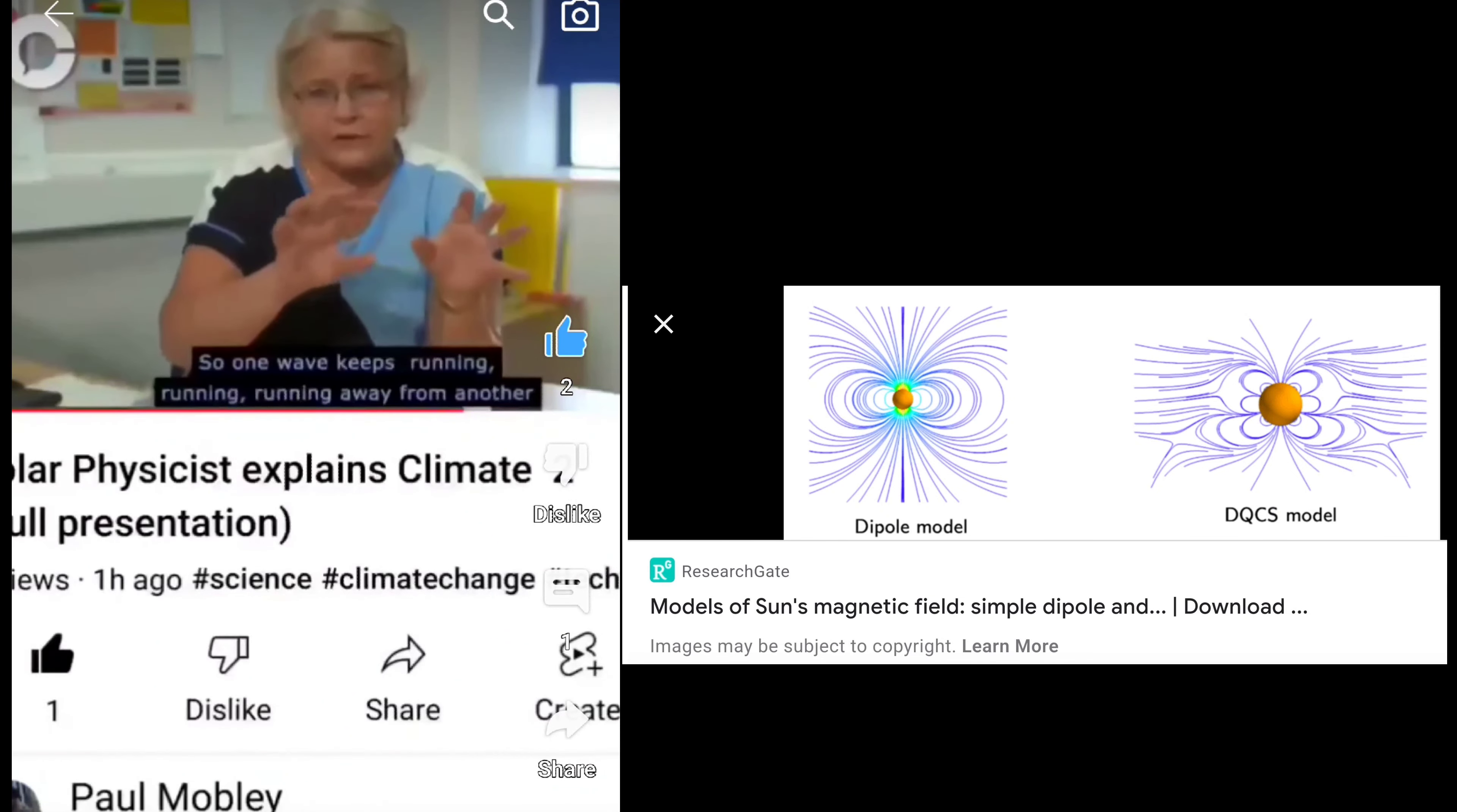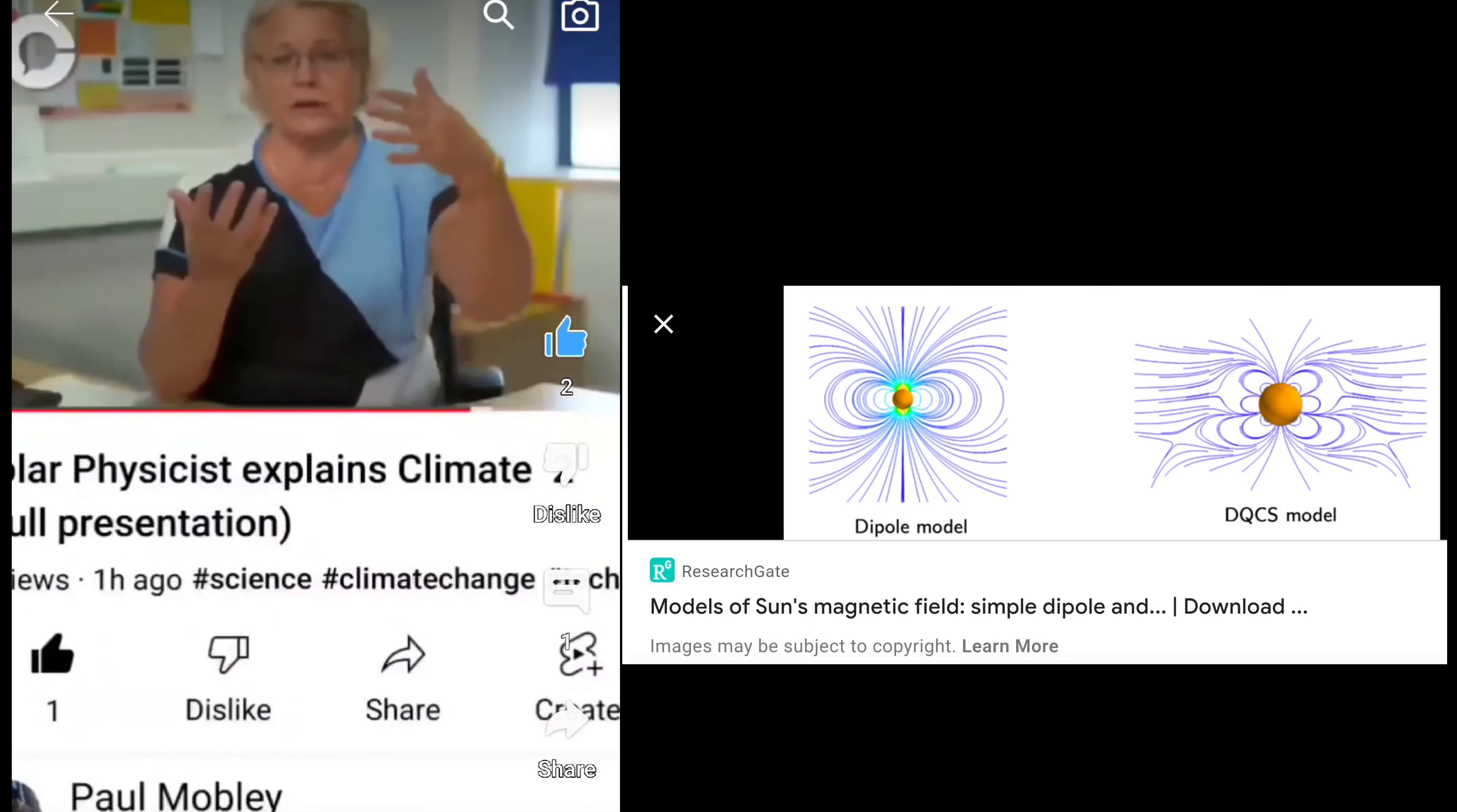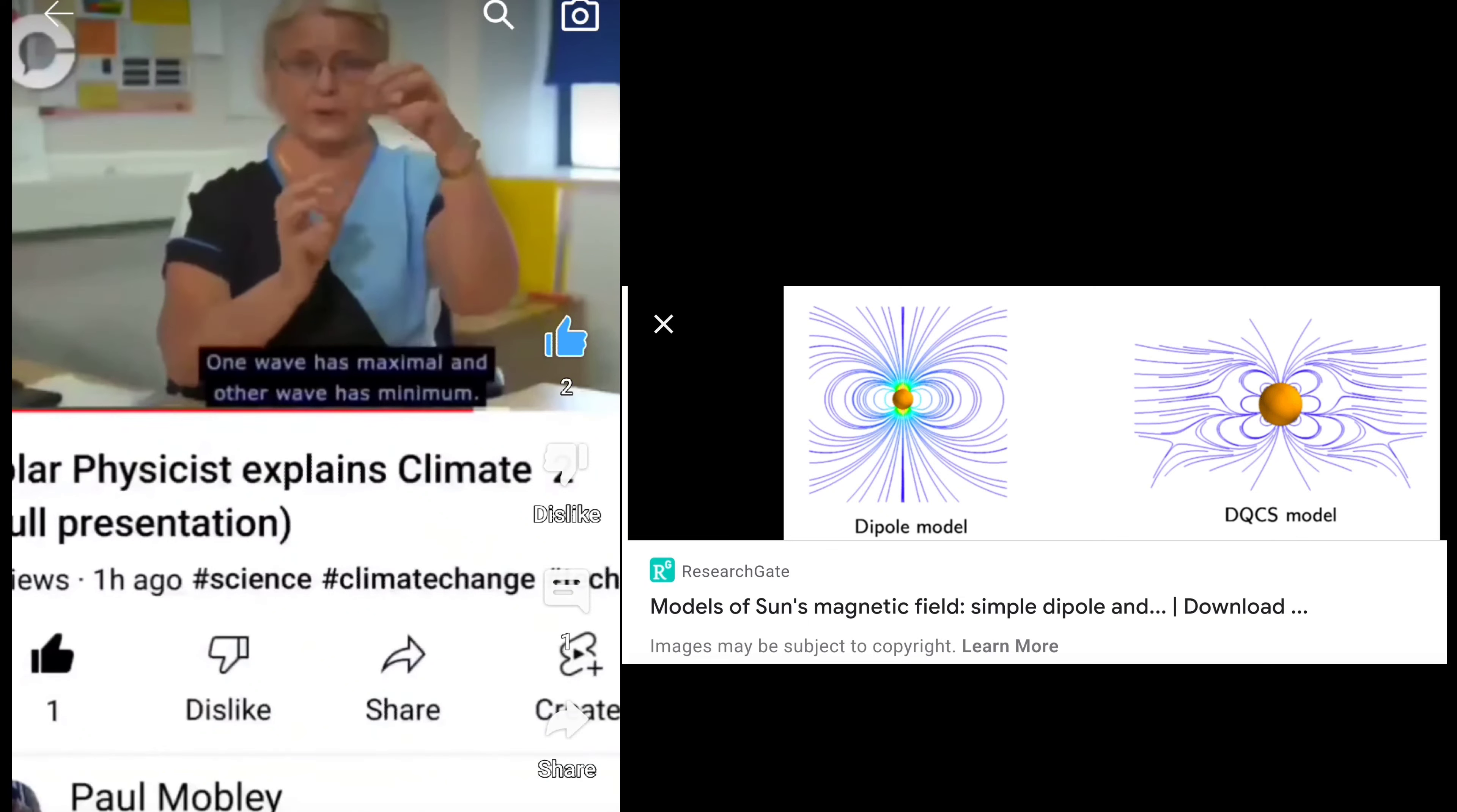So one wave keeps running away from another until they reach the stage of destructive interference. So one wave has maximum and the other wave has minimum. Then these two waves, when they add together, the resulting wave will be nearly zero, very small. And this is what we are heading in Grand Solar Minimum.